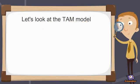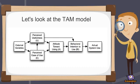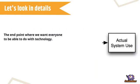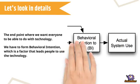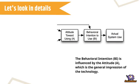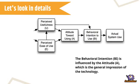Let's look at the technology acceptance model. TAM is an information system that models how users accept technology and how they can use that technology. The actual use is the endpoint where we want everyone to be able to do with technology. We have to form a behavioral intention, which is a factor that leads people to use the technology. The behavioral intention is influenced by the attitude, which is the general impression of the technology. They will form the intention and then go on to use it.